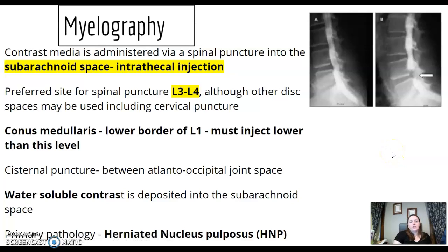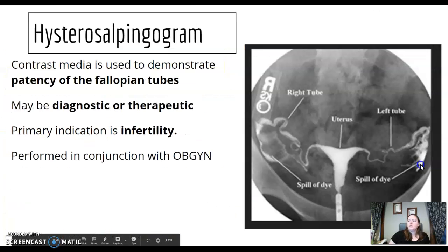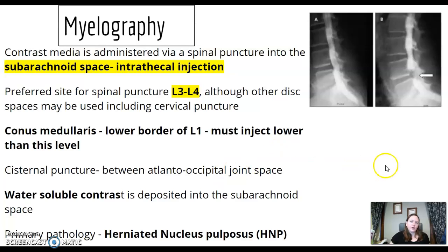Myelograms: contrast media is administered via spinal puncture into the subarachnoid space through intrathecal injection. The preferred site is L3–L4. The conus medullaris is at the lower border of L1, and injection must be below this level. Review the term cisternal puncture — that's between the atlanto-occipital joint space. Know why we use water-soluble contrast, where it's deposited, and that the primary pathology for myelogram is HNP — make sure you know what HNP stands for.